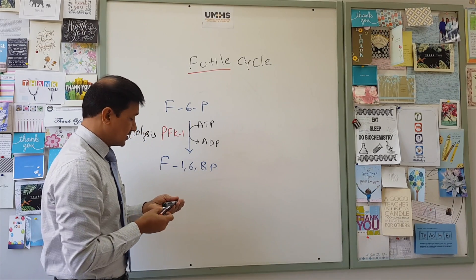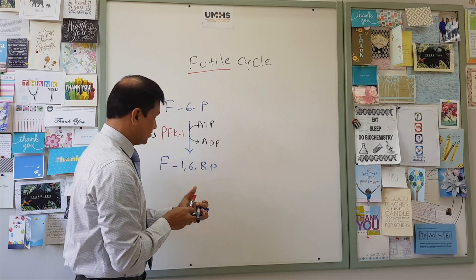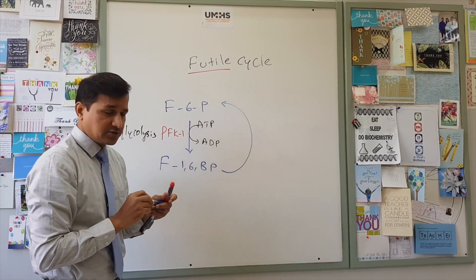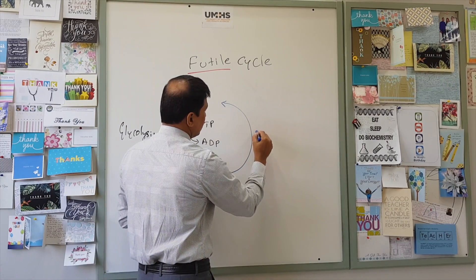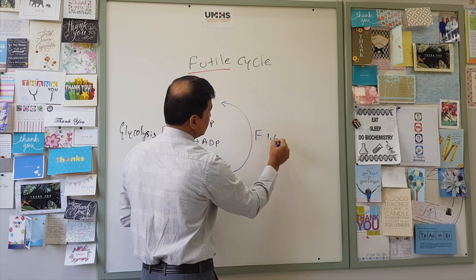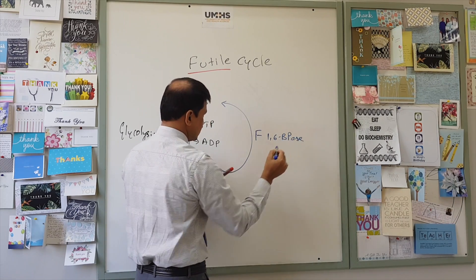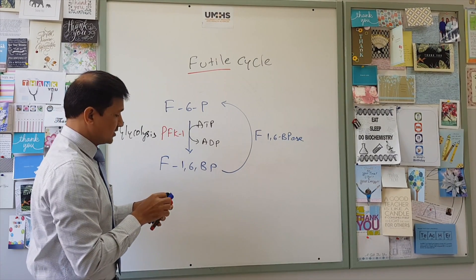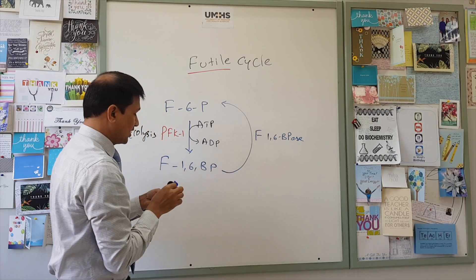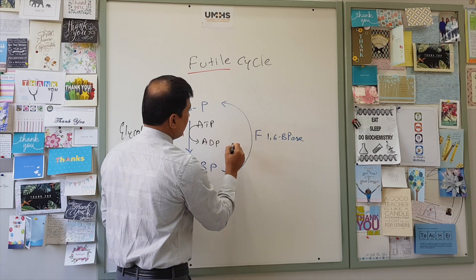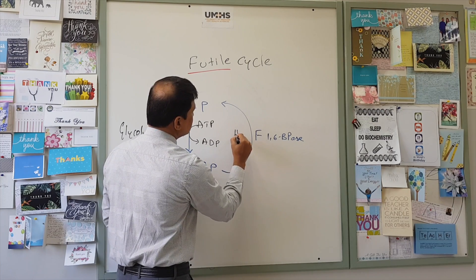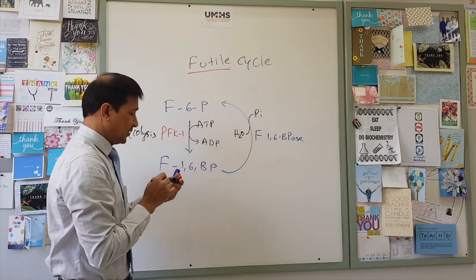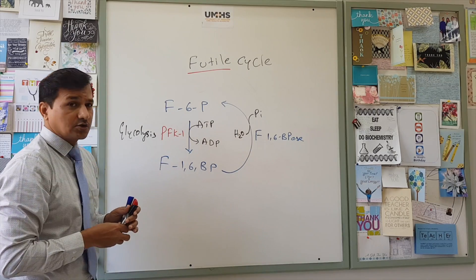Now the opposing pathway is gluconeogenesis. In gluconeogenesis, fructose-1,6-bisphosphate is converted back into fructose-6-phosphate. This job is done by the enzyme fructose-1,6-bisphosphatase, which catalyzes that reaction. During this reaction, this phosphatase incorporates water — a water molecule (H₂O) is incorporated — and inorganic phosphate (Pi) is released, thereby reconverting it back into fructose-6-phosphate.